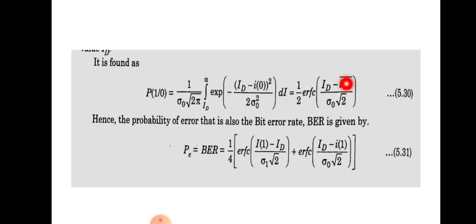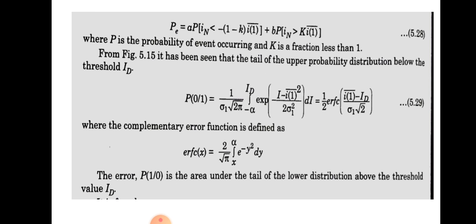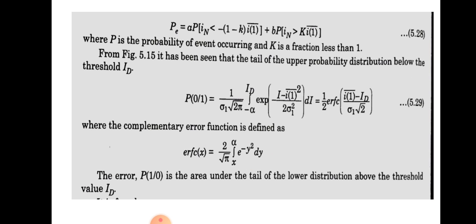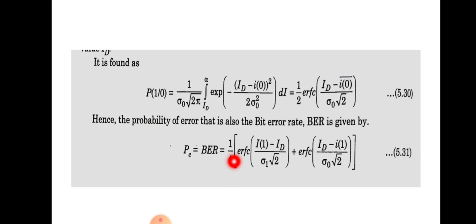The probability of error, which is also the bit error rate, is the sum of both conditions. Assuming P(1) = 1/2 and P(0) = 1/2, we get: P(error) = (1/4) · [ERFC((Ī₁ − id) / (σ₁√2)) + ERFC((id − Ī₁) / (σ₀√2))], where id is the threshold value, Ī₁ and Ī₀ are the mean noise currents, and σ₁ and σ₀ are the variances for bits 1 and 0 respectively.